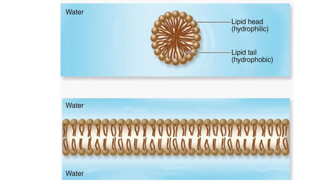If a drop of phospholipids is placed in water, they automatically form a sphere called a micelle. This arrangement minimizes water contact for the hydrophobic tails while maximizing it for the hydrophilic heads that stay outside the micelle and are in contact with the water.